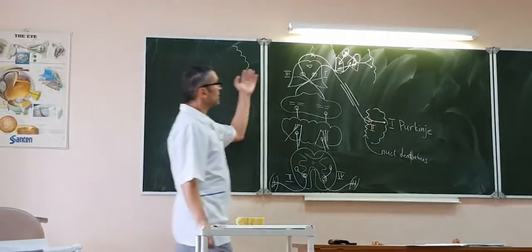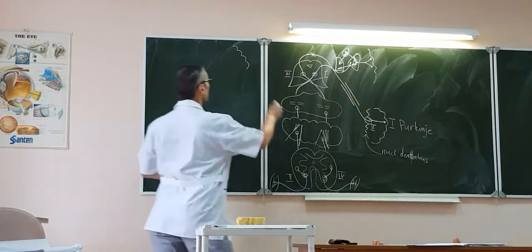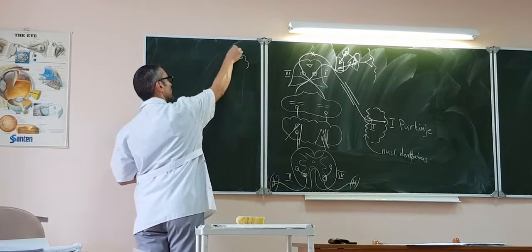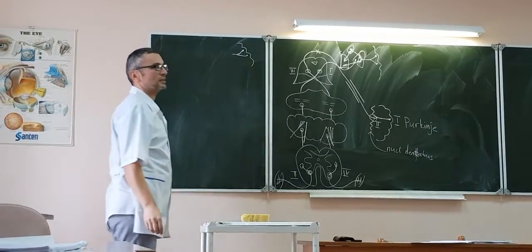The motor area here is saved in two parts: gyrus precentralis and lobulus parietalis superior. So this track starts in two parts.